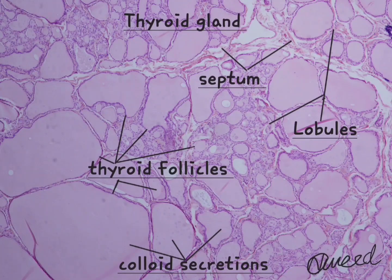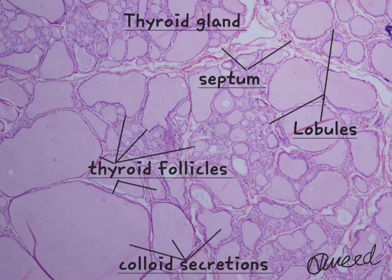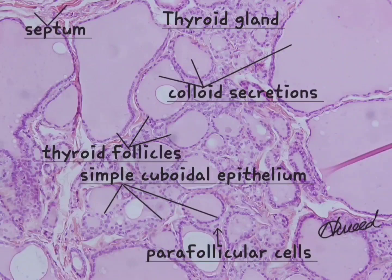The parenchyma consists of spherical cyst-like structures called thyroid follicles. They consist of simple cuboidal epithelium surrounding a central cavity that contains a gelatinous material called colloid.